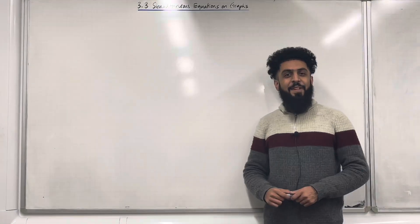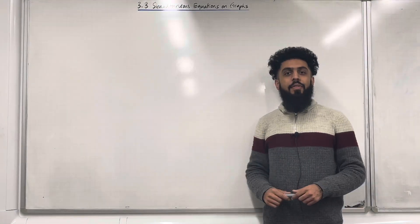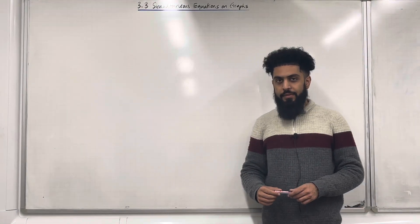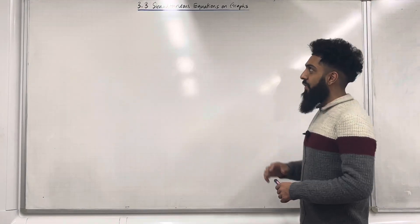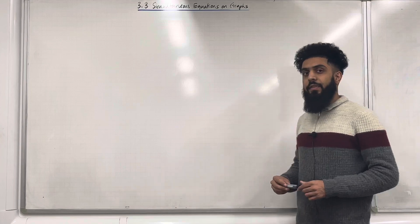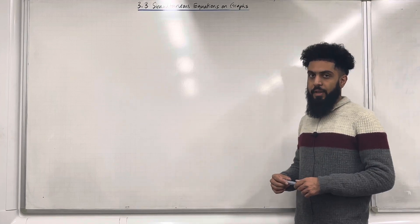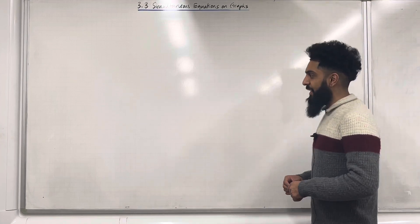In this teaching video I'll be looking at 3.3 simultaneous equations on graphs. 3.3 represents chapter 3, section 3 of the Pearson A-level maths, pure maths, year 1 textbook.